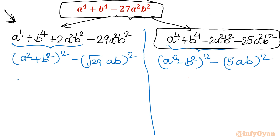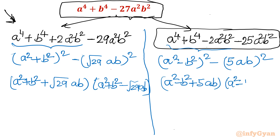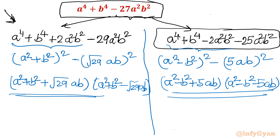The answer is clear. For the first approach we write: (a² + b² + √29·ab)(a² + b² - √29·ab). For the second answer: (a² - b² + 5ab)(a² - b² - 5ab). So you can see both factorizations are there. I hope you liked this video. Thank you so much for watching. Do not forget to like, share, and subscribe. Bye bye till the next video. Good luck.